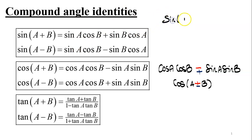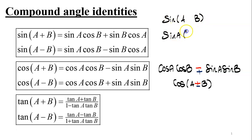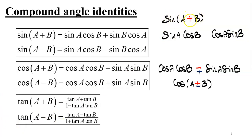Regarding the compound angle identities of sine, the two terms involved are sine a cosine b and cosine a sine b — sine of the first angle times cosine of the second, then cosine of the first times sine of the second. If we're adding a and b inside sine, so sine of a plus b, we add these two terms.